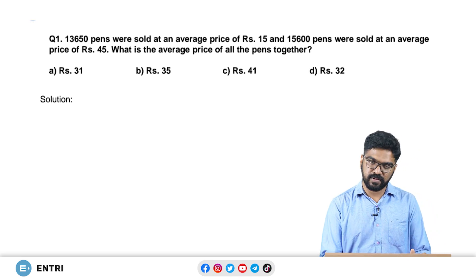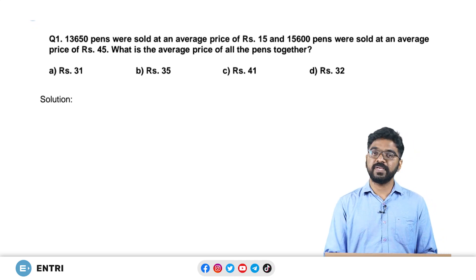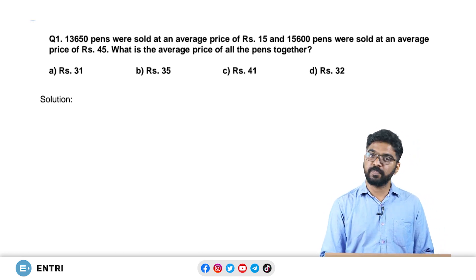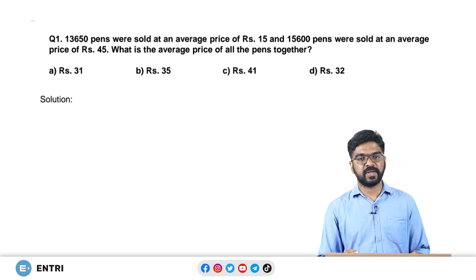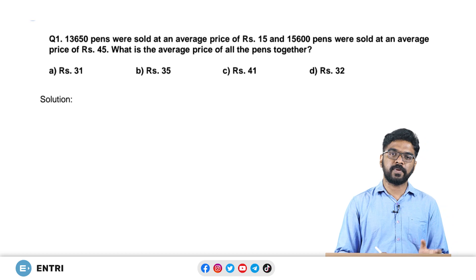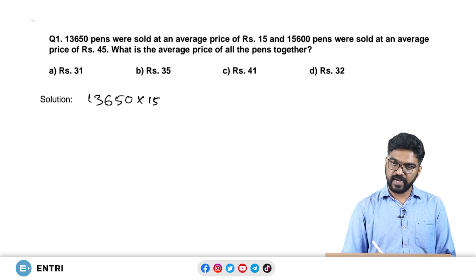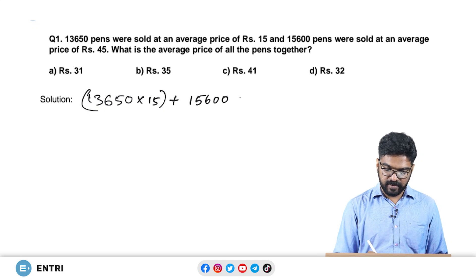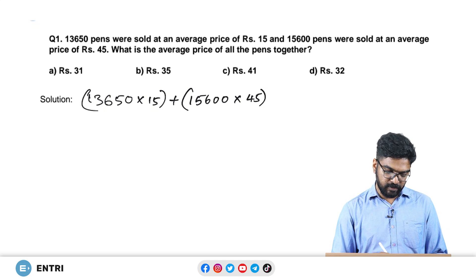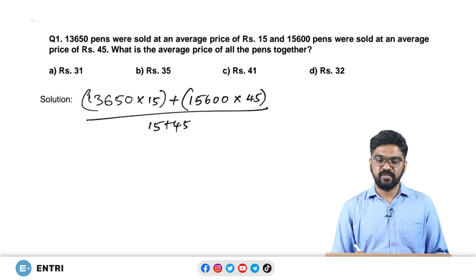Let's try a question with this idea. 13,650 pens were sold at an average price of Rs. 15 and 15,600 pens were sold at an average price of Rs. 45. What is the average price of all the pens together? By the weighted average principle we need the total price: 13,650 into 15 plus 15,600 into 45, divided by the total number of pens. But this is a very tedious calculation.